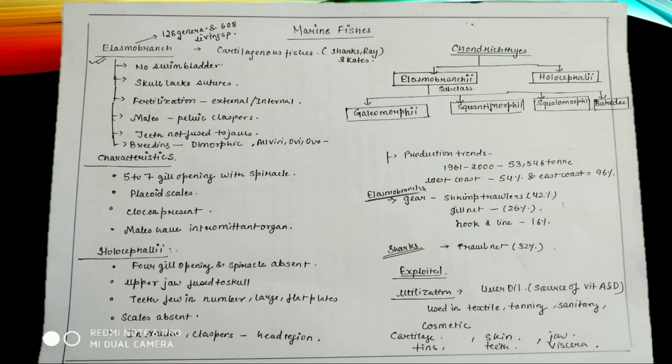They are altogether having five to seven gill openings with spiracles. They have placoid scales. Cloaca may be present - cloaca is that organ used for excretion purpose in cartilaginous fishes.